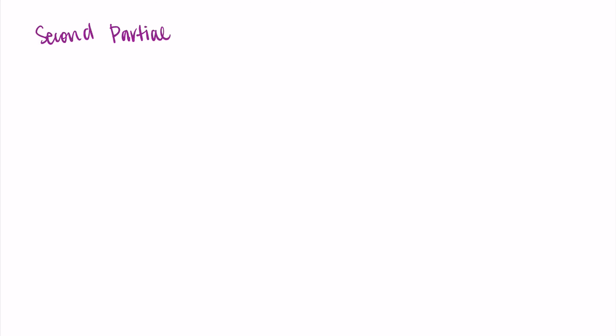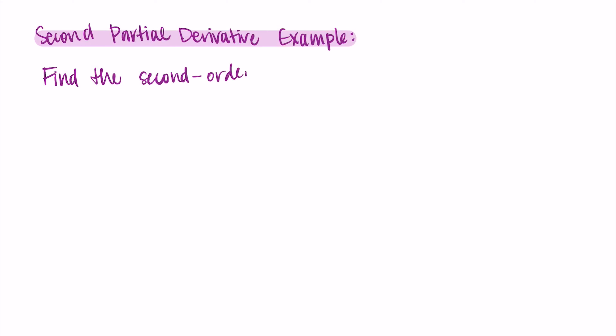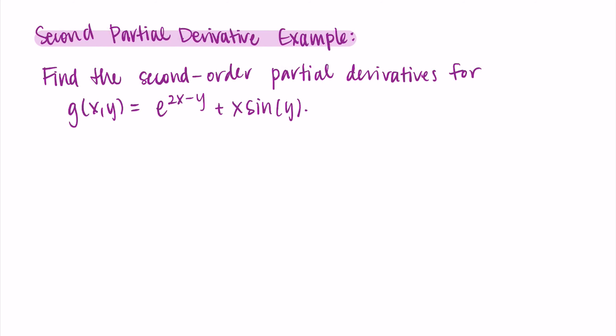Welcome. In this video, I'm going to go through an example of finding second partial derivatives using a function that's a little more complicated. We want to find the second order partial derivatives for the function g(x,y) = e^(2x - y) + x·sin(y). This has some exponentials and a trig function, so we need to be a little more detail oriented when finding the partial derivatives to make sure we're doing things properly.